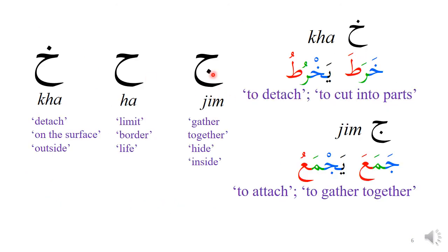JIM and HA have exact opposite meanings. The general meaning of JIM is to gather together — 'jama'a' and 'yajma'u' in the present tense — meaning to gather together or attach something. You can see the two parts of the JIM are attaching at an angle, and this attachment is indicated by the dot below. HA has the opposite meaning: 'harata,' to cut into parts, where the detachment is indicated by the dot above. So 'jama'a' means to gather and attach, while 'harata' means to cut into parts or detach — exact opposites.